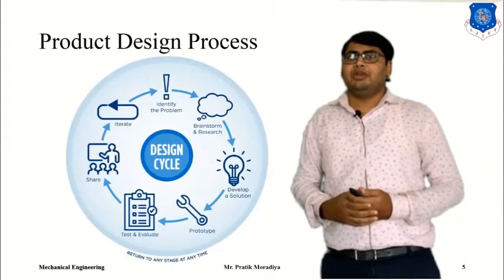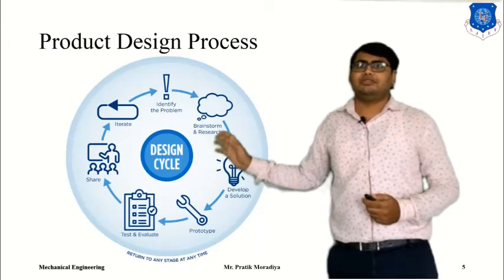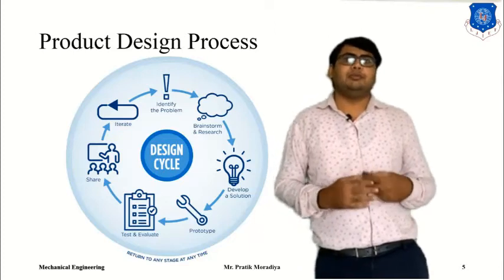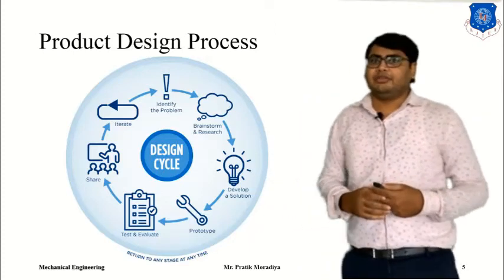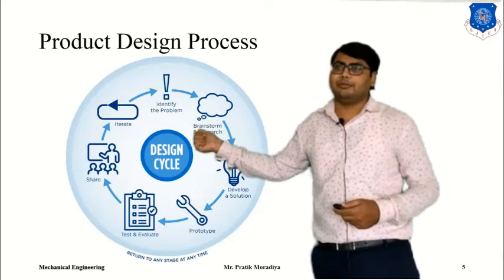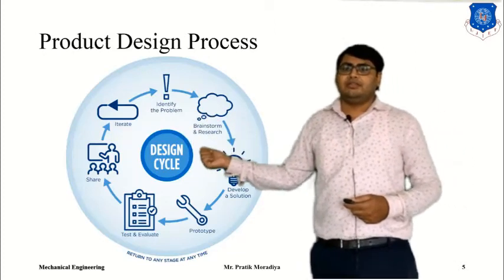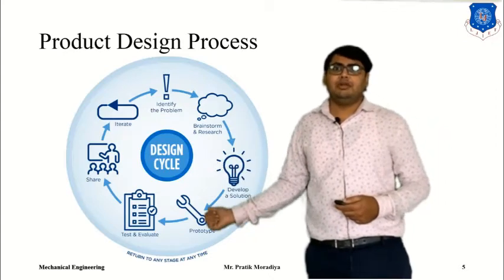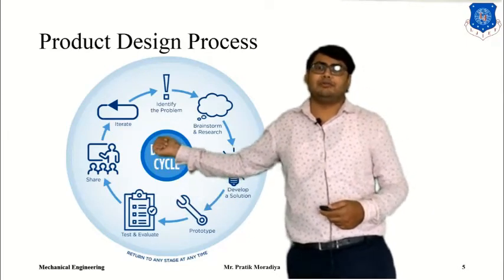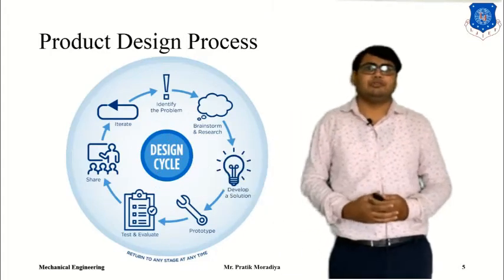We can summarize the product design process as a cycle, because it keeps on evolving and continually tries to improve the product. Normally the product design process starts with identifying the problem, then brainstorming and generating ideas, then developing a solution, then building a prototype and testing it, then sharing insights, and then repeating the same process.